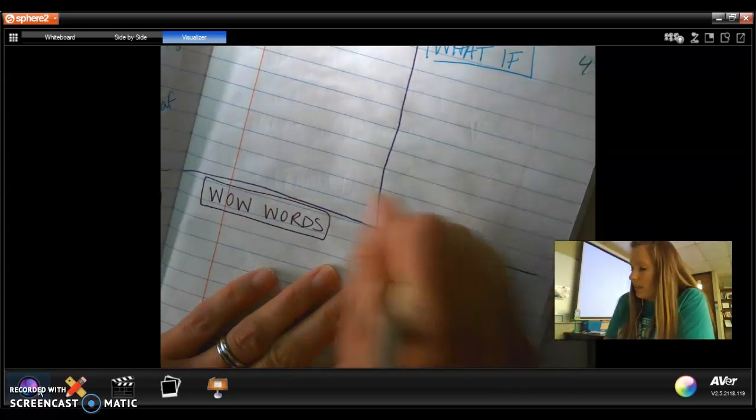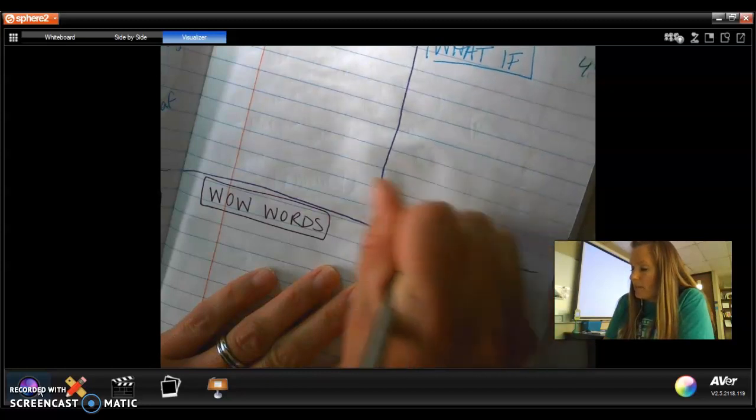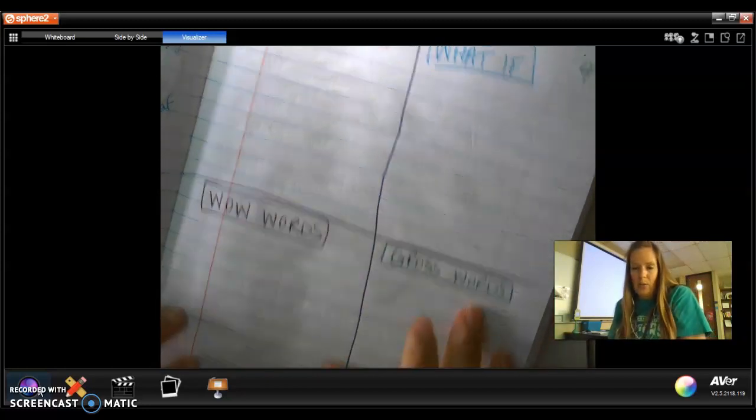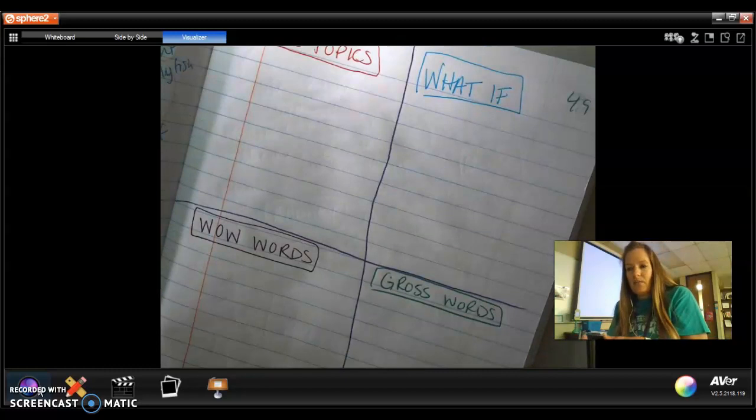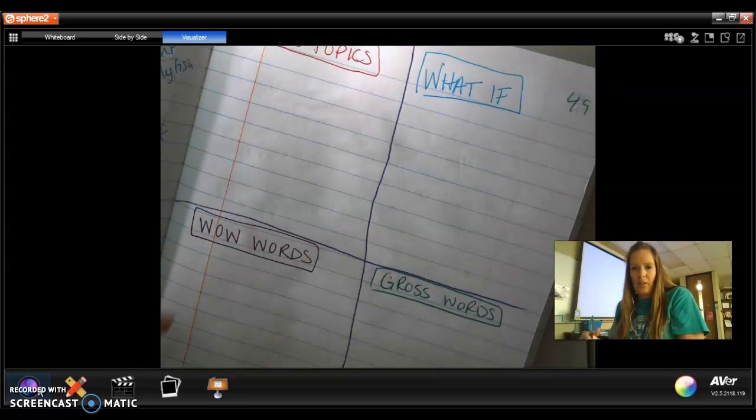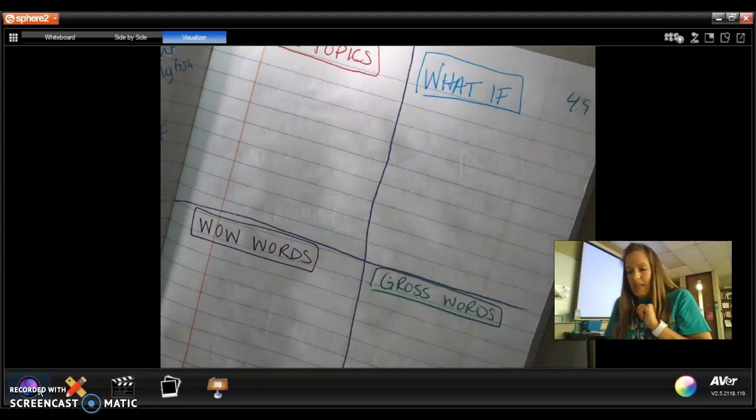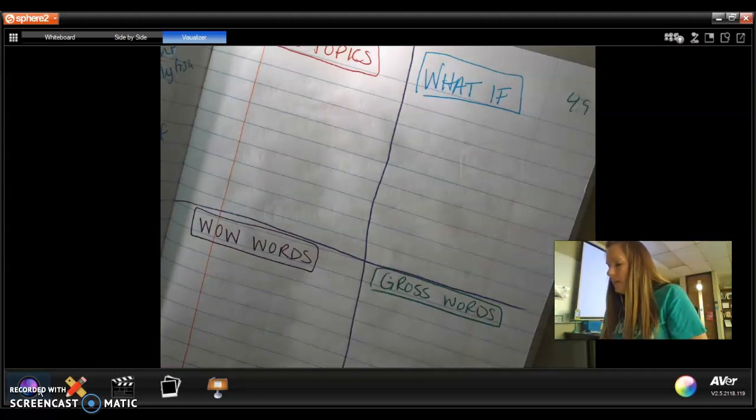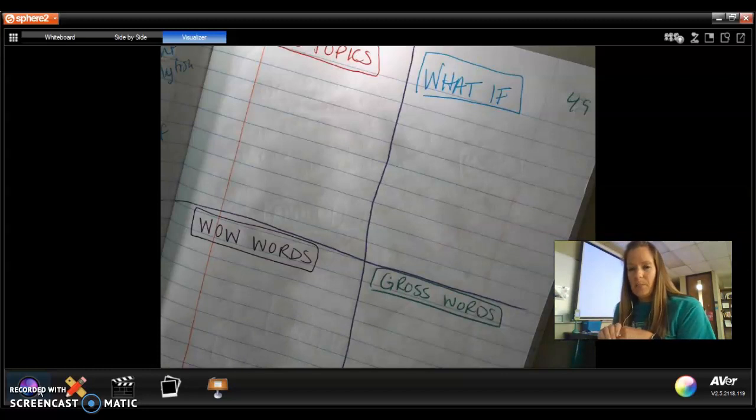And then our last box is going to be gross words. Sometimes we would do all of these one at a time, but sometimes I like to put them all out there so that as we get talking, you might think of something that goes in one box versus another. Your goal for this is probably three to five again, just like you had on the other page. So I will give you some examples in all of these boxes. You may steal whatever you want and add to whatever you want.